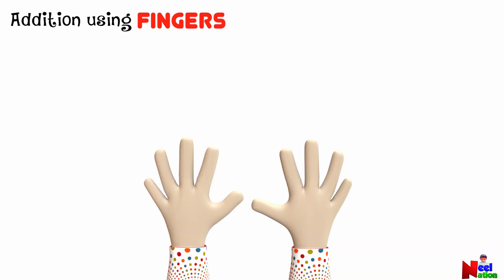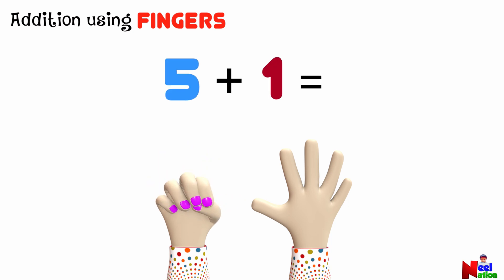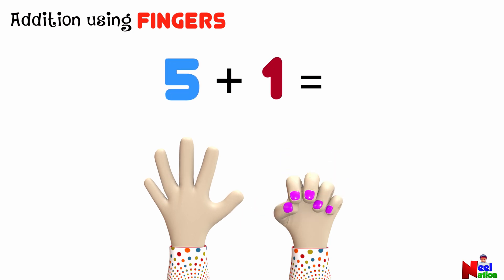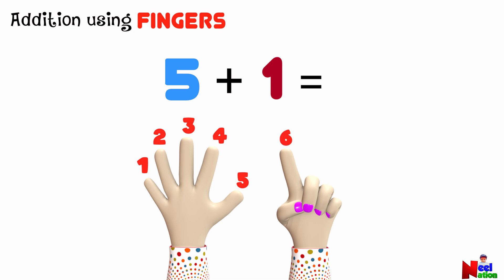Let's try adding with our fingers. Can you tell me what is five plus one? First, hold up five fingers. Now we need to add one more, so lift one more finger. Let's count all the fingers together: one, two, three, four, five, six. That means five fingers plus one more equals six.